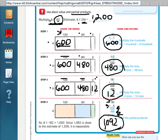Now, remember our estimate back up here of 1,200? Our real answer is close to that, so we can say it is reasonable.